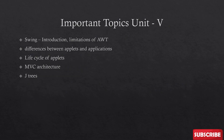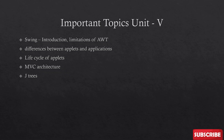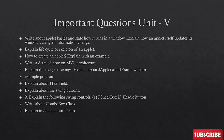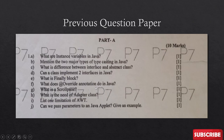Important topics for Unit 5: swing introduction, limitations of AWT, differences between applets and applications, life cycle of applets, MVC architecture, and J Trees. The syllabus is vast, but I have handpicked some topics — it is not necessary that only these topics will come in the exam, so try to prepare a little more beyond this list. Important questions include: the life cycle or skeleton of an applet, how to create an applet, MVC architecture, JTextField, JTextBox, and JRadioButton.